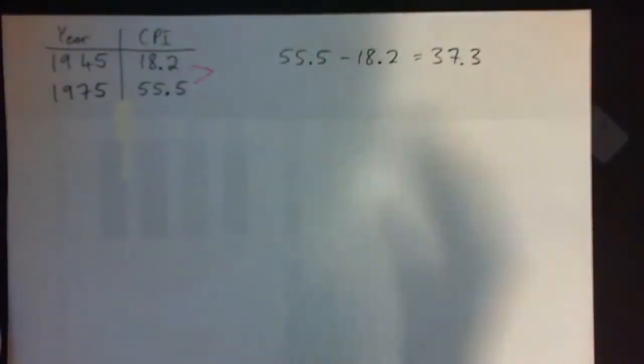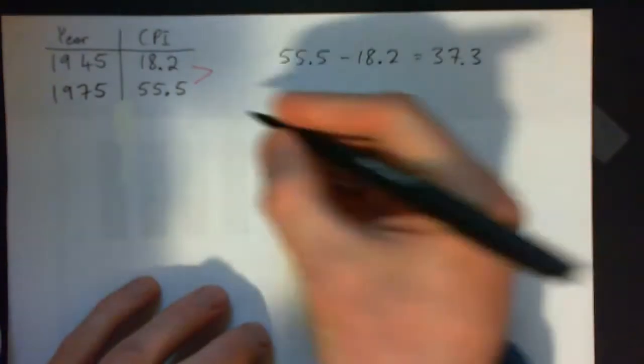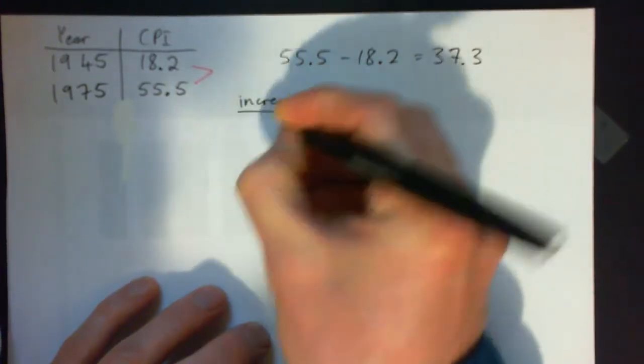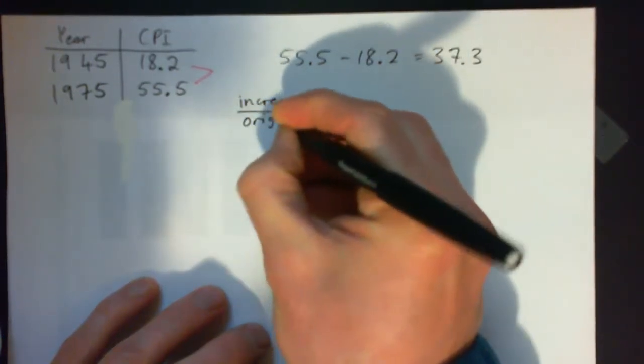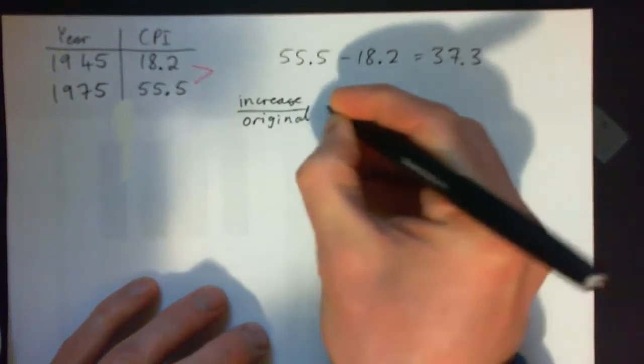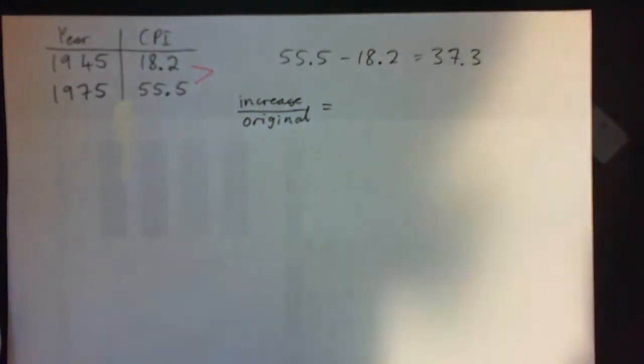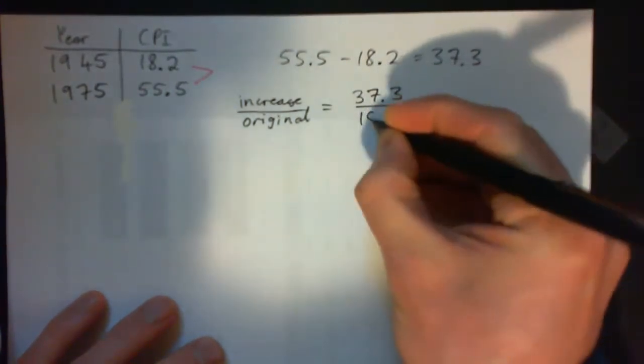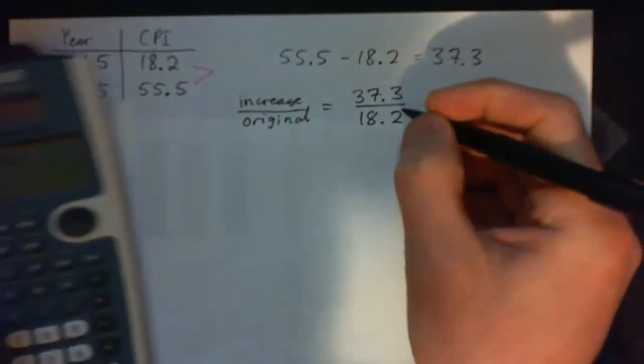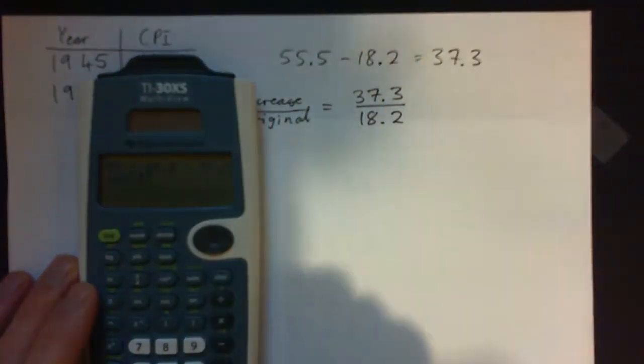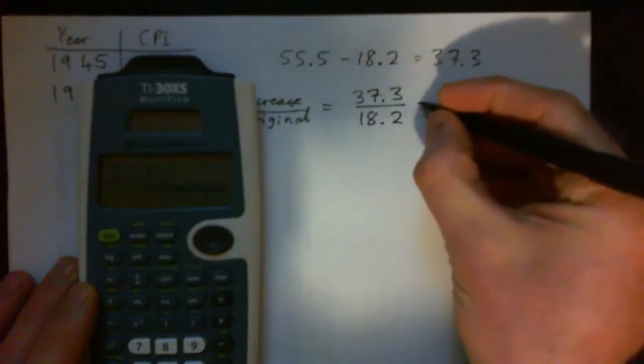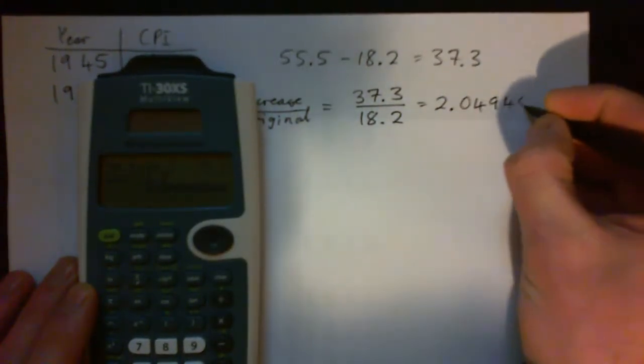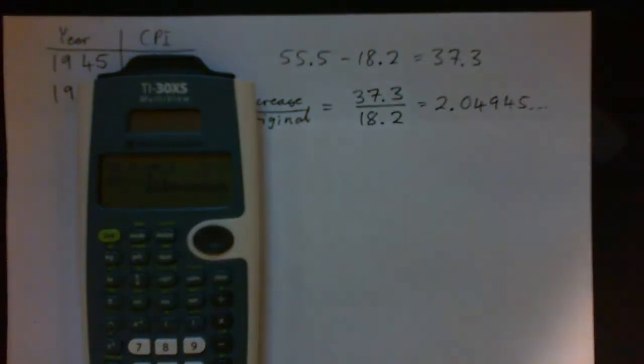That's the amount it increased by, but to get the percent change or the inflation rate, you put the increase or the change over the original. Increase over original - compare the increase to where you started. The increase is 37.3 and we started at 18.2, so we put 37.3 divide that by 18.2 and we get 2.04945.